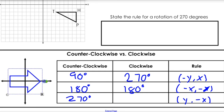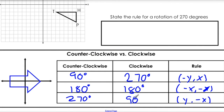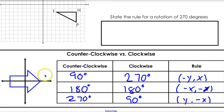A 90-degree clockwise turn equals a 270-degree counterclockwise rotation. For 180, going 180 degrees counterclockwise is the same as going 180 degrees clockwise — they're equivalent. And going 270 degrees counterclockwise is the same as turning 90 degrees clockwise. That's a good reference for you.